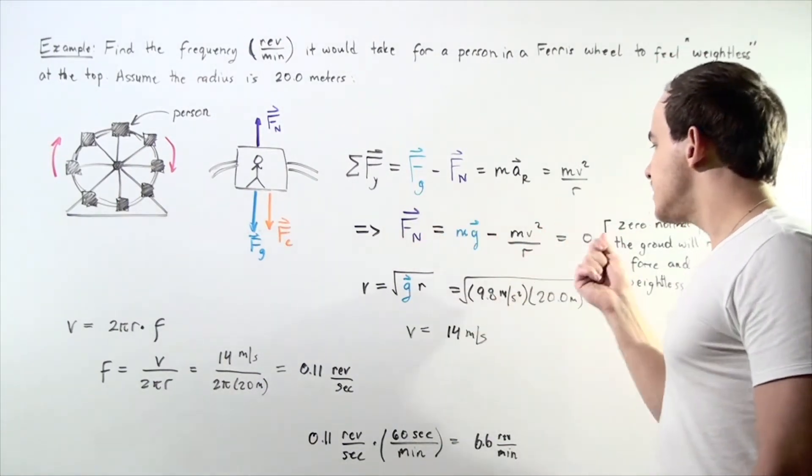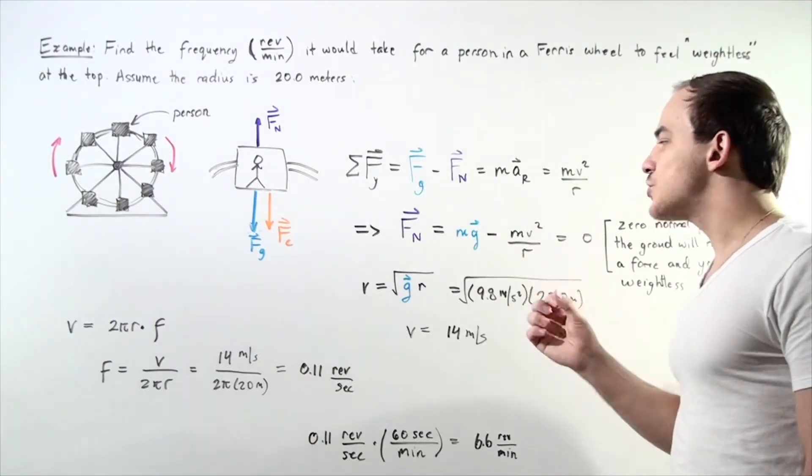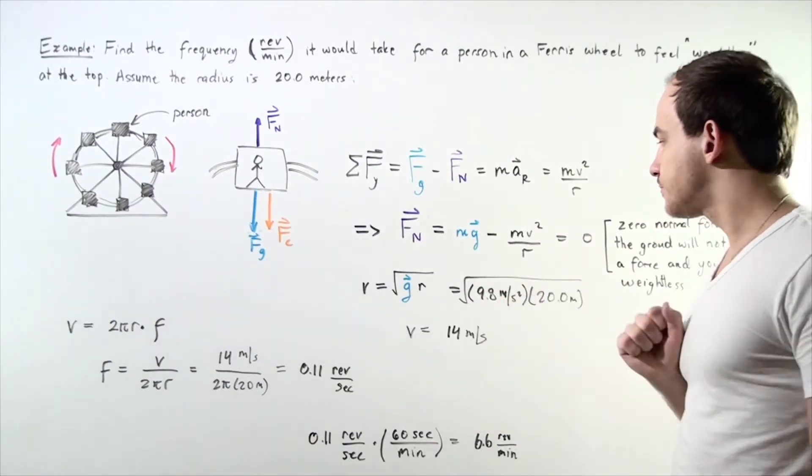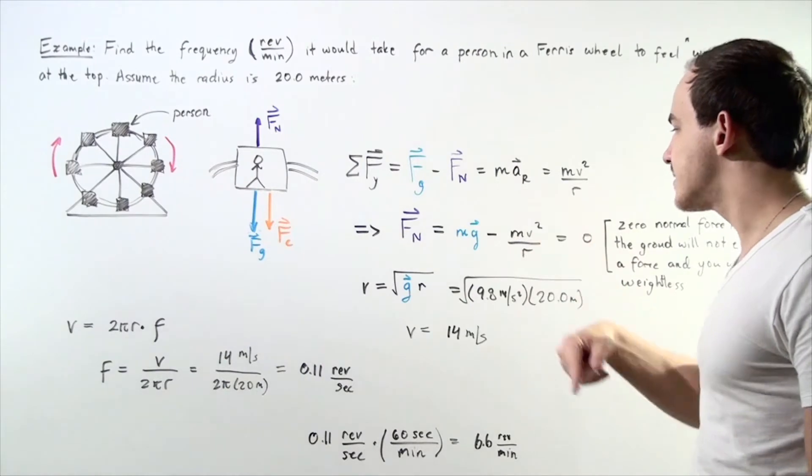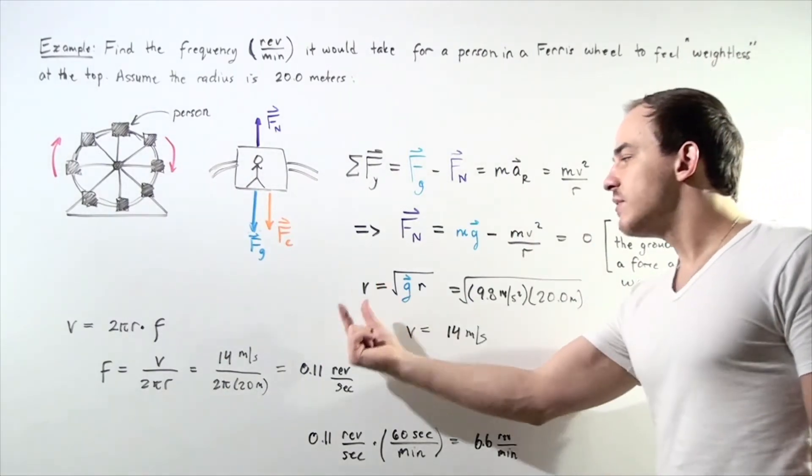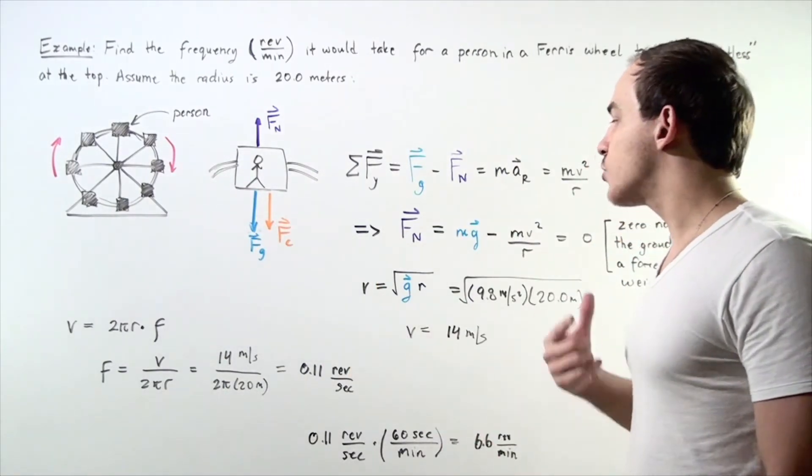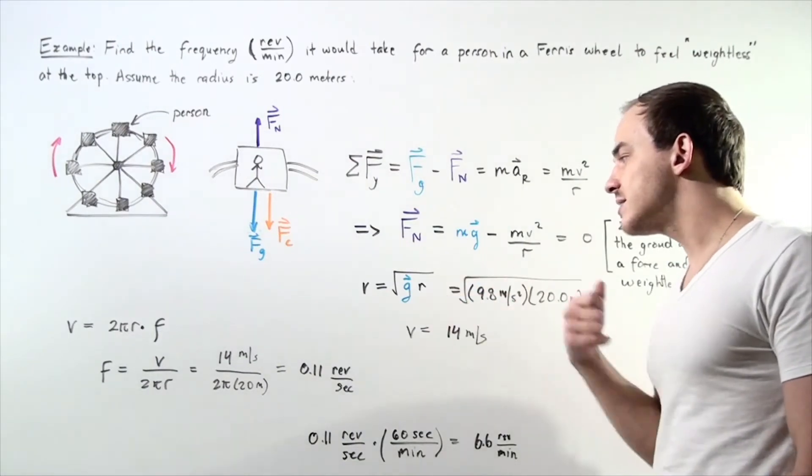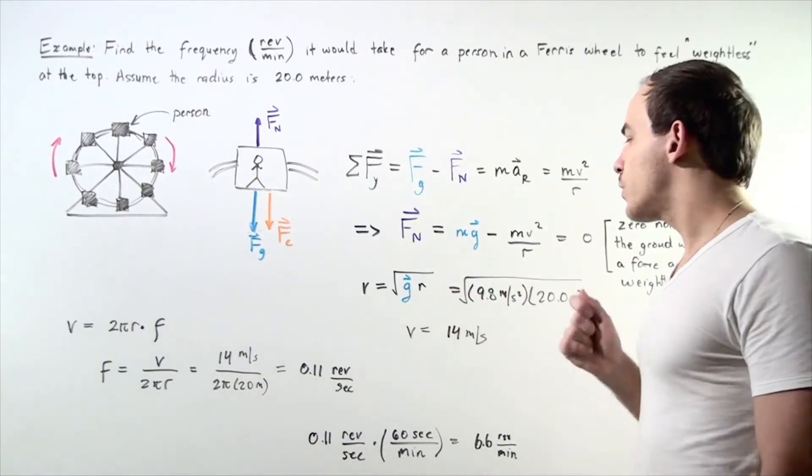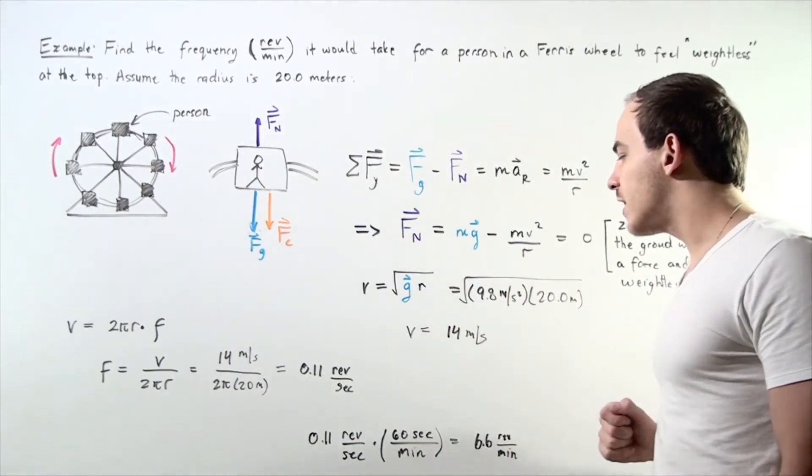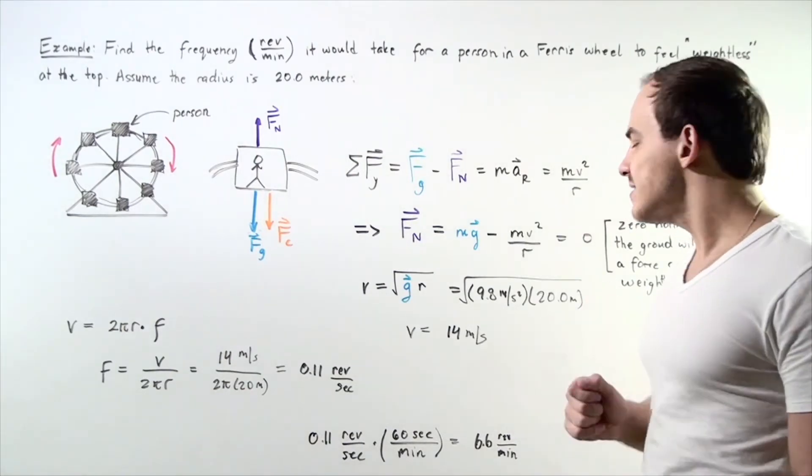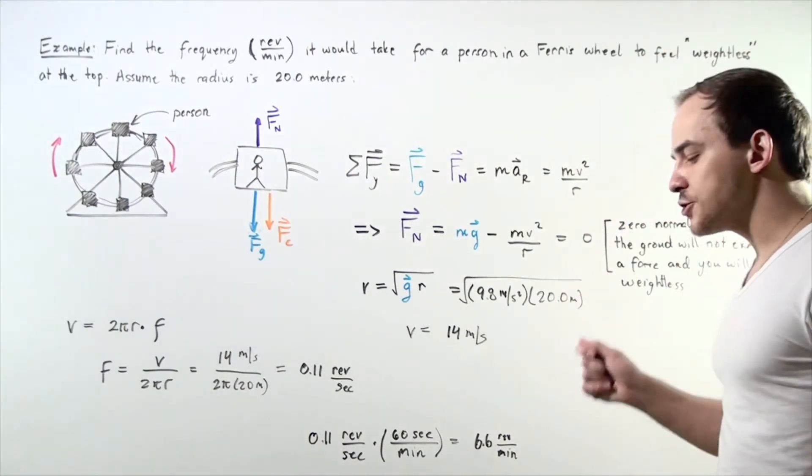We set this equal to zero and we rearrange and solve for the velocity. Notice the mass is canceled and we're left with the velocity is equal to the square root of our gravitational constant g multiplied by our radius r. So we plug in our values and we find the velocity of 14 meters per second.